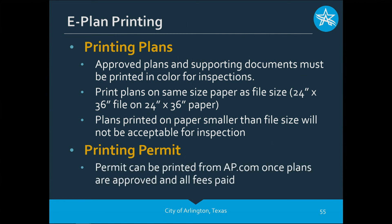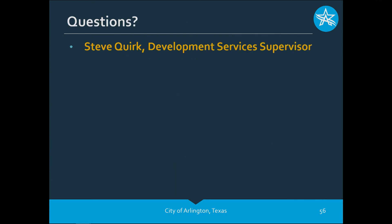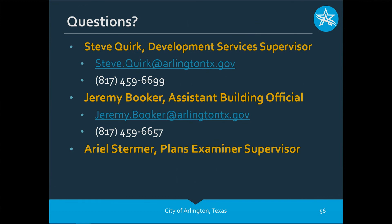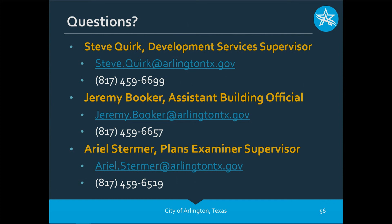You can also print your permit from arlingtonpermits.com once all fees are paid and you've been notified that the permit is ready and plans have been approved. If you have any questions, our contact information is on the screen. Both Steve Quirk and Jeremy Booker are available, and Ariel Stermer, our Plans Examiner Supervisor, is also a good source for questions. You can see all of our email addresses and direct office phone numbers on the screen. We thank you for attending today and look forward to working with you.